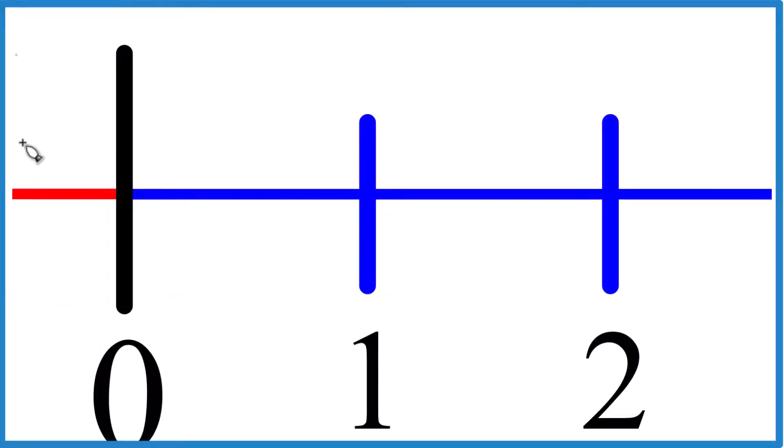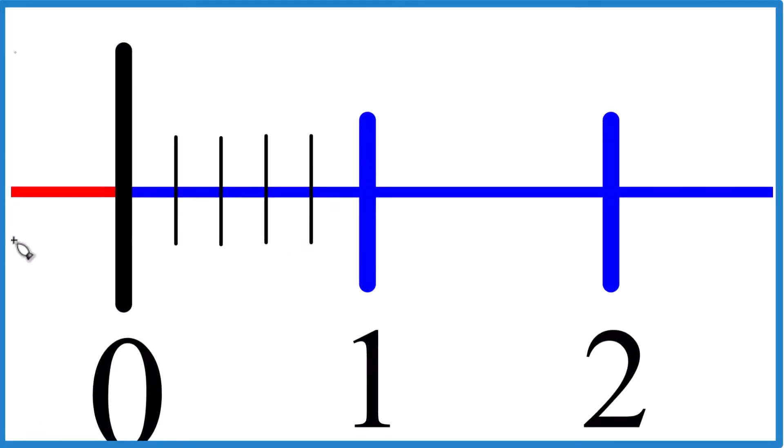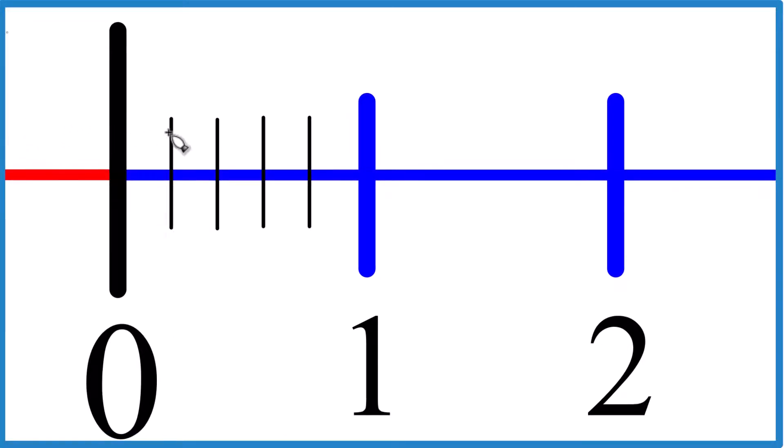So when we think about the fraction two fifths, we're looking at two parts of five. So let's divide this into five even pieces. Remember it's two fifths, so we want two parts out of five.